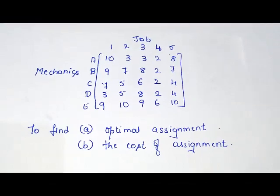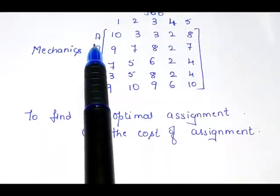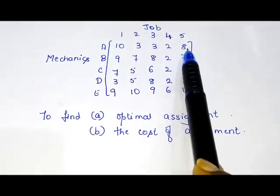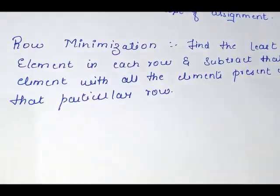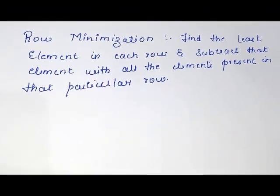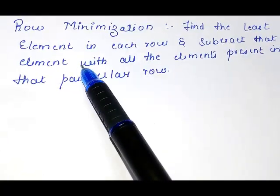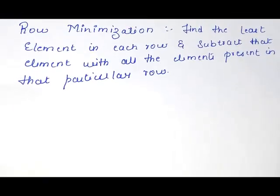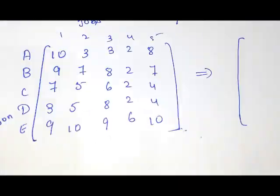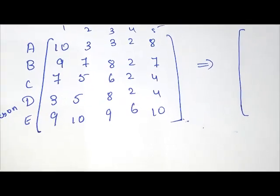Let's take an example. The objective is to find the optimal assignment and the cost of assignment. We have 5 persons referred to as mechanics and 5 jobs, so it is a complete square matrix. We start with the first step, which is row minimization. For each row, we find the least element in that row and subtract it from all the elements present in that particular row.